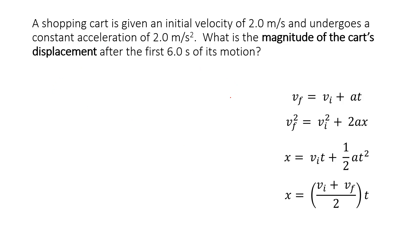Looking at this problem, a shopping cart is given an initial velocity of 2.0 meters per second and undergoes a constant acceleration of 2.0 meters per second squared. What is the magnitude? This just means don't worry about the direction of the displacement. After 6.0 seconds, that leads us to this givens list with x being our unknown.